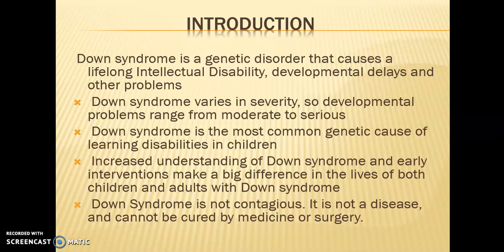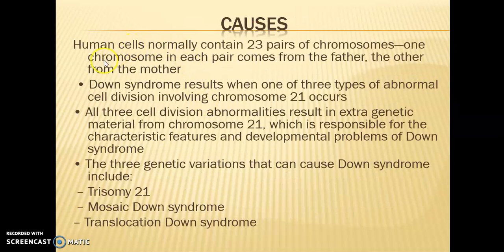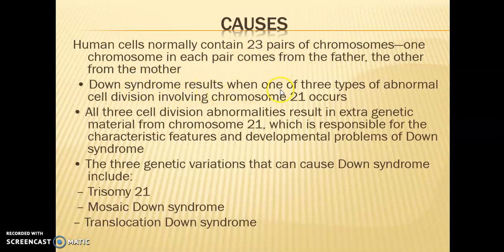Regarding causes: human cells normally contain 23 pairs of chromosomes. One chromosome in each pair comes from the father and the other from the mother — 22 pairs of autosomes and one pair of sex chromosomes, equally shared from father and mother. Down syndrome results when one of three types of abnormal cell division involving chromosome 21 occurs.